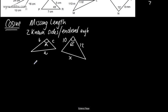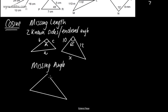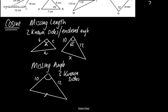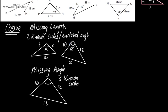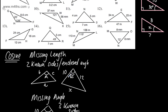We can also use the cosine rule to find missing angles. To use the cosine rule for finding a missing angle, we would need three known side lengths. For example, if I wanted to find an angle and I had sides of 10, 12, and 13, we could find that angle using the cosine rule. So to summarise: missing lengths need an enclosed angle and two known sides; a missing angle needs three sides of the triangle.